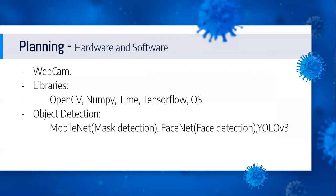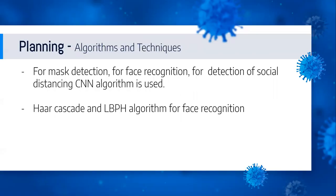We use our laptop's camera and the libraries used are OpenCV, NumPy, Time, TensorFlow, and OS. The object detection models used are: MobileNet for face mask detection, FaceNet for face detection, and YOLO v3 for social distancing. The algorithms and techniques used include a CNN-based object detection approach for mask detection and social distancing. We are also using Haar Cascade for face recognition and the LBPH algorithm — Local Binary Pattern Histograms — which is used to store trained face data for recognition.